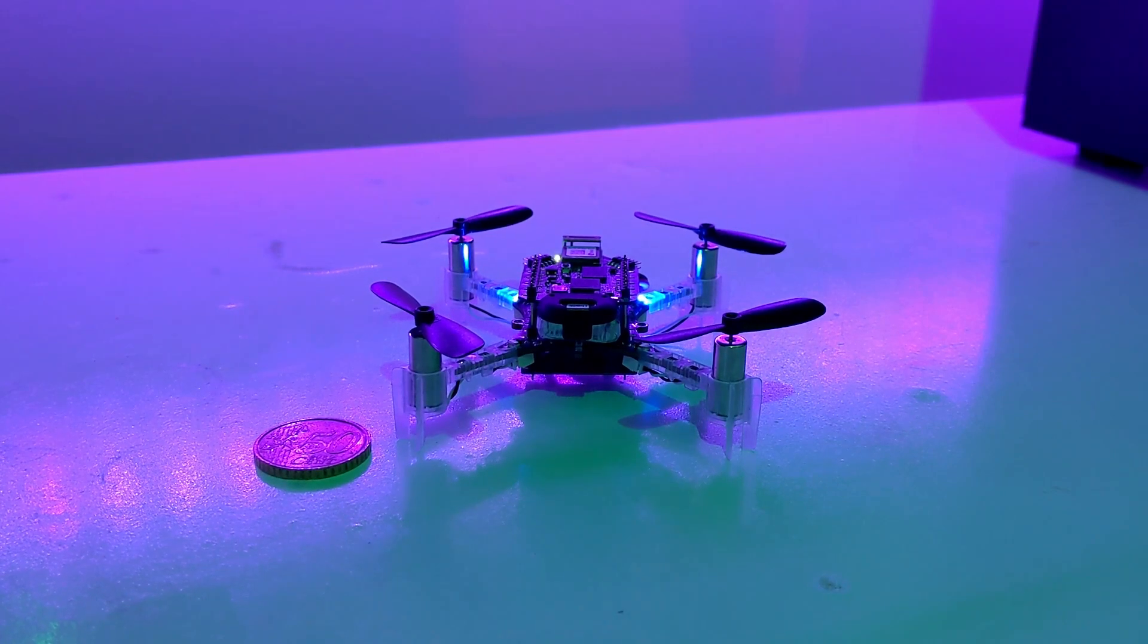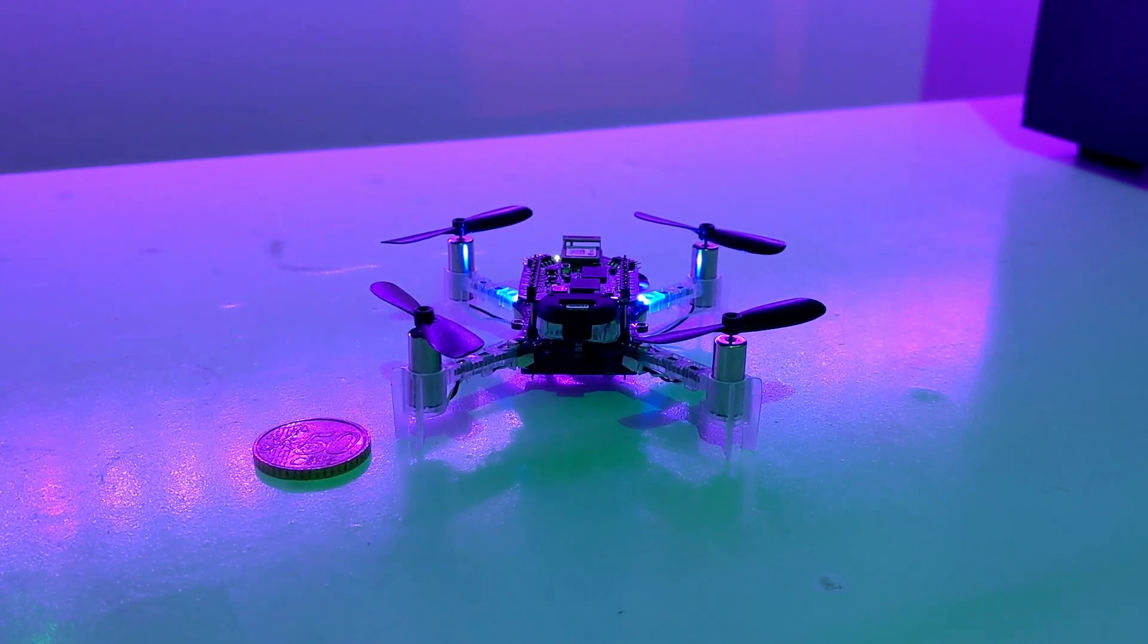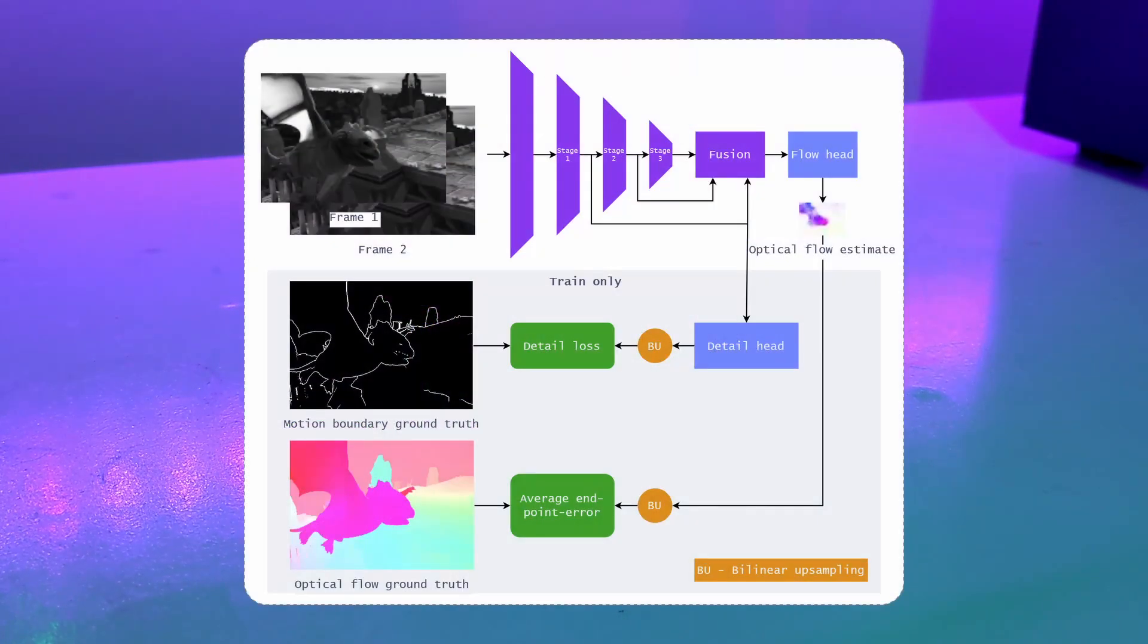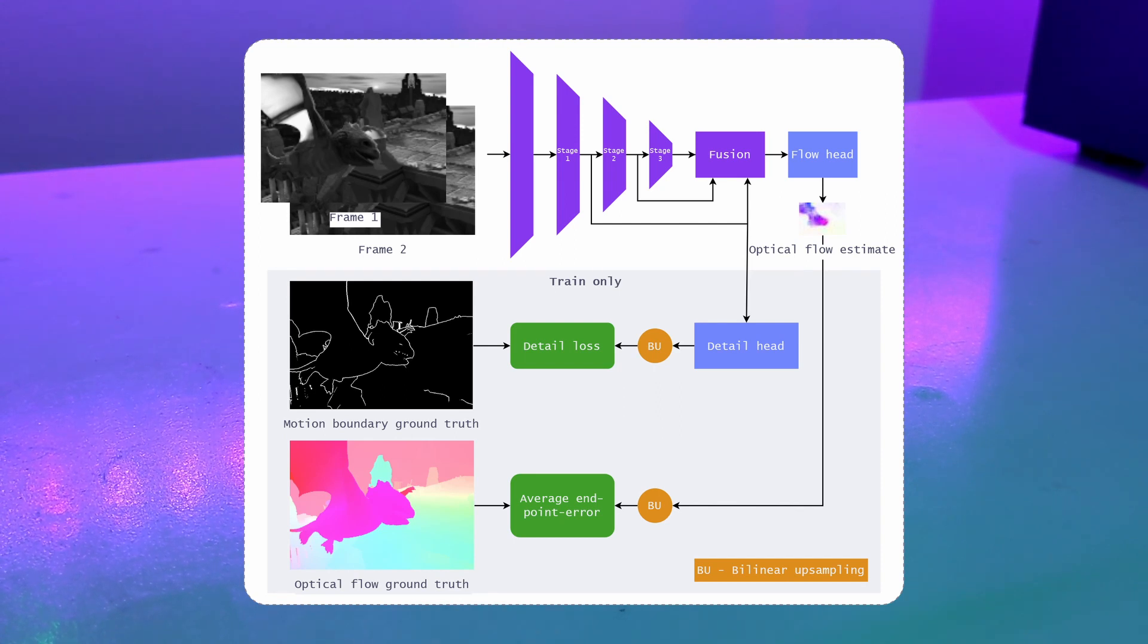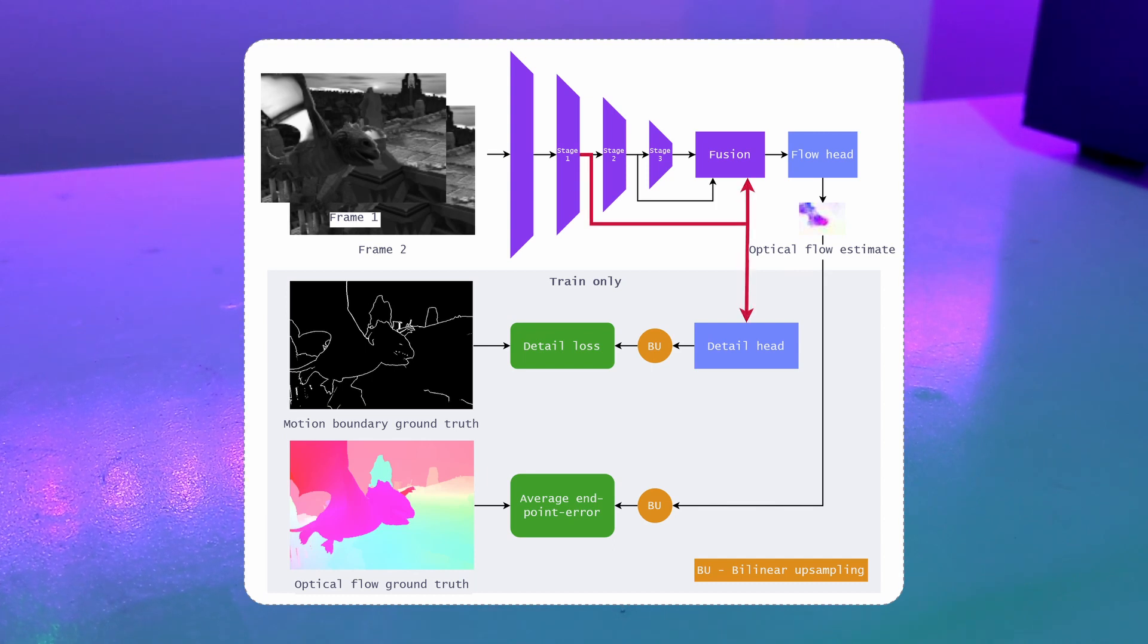Drawing inspiration from real-time semantic segmentation methods, our proposed approach addresses the challenge of low-level spatial information loss in real-time methods by introducing a multi-path architecture that encodes low-level spatial information in a separate path.